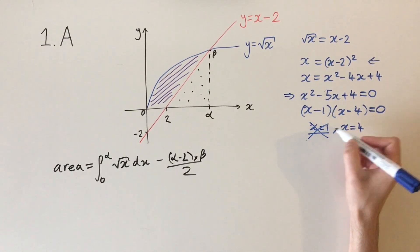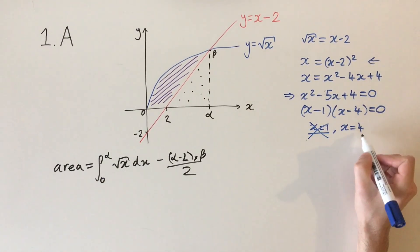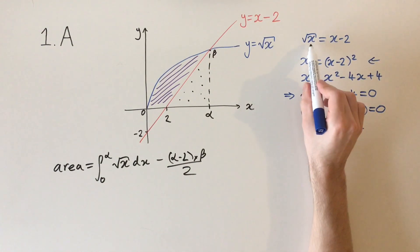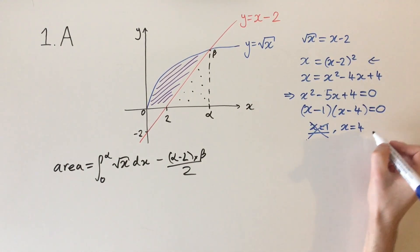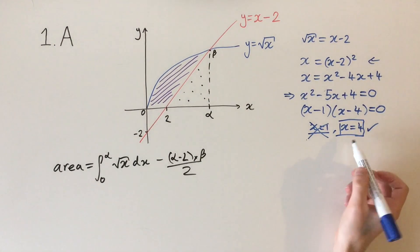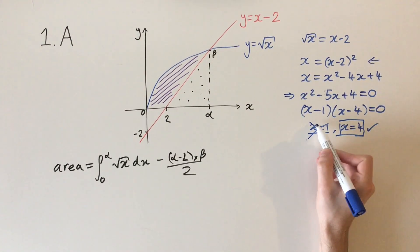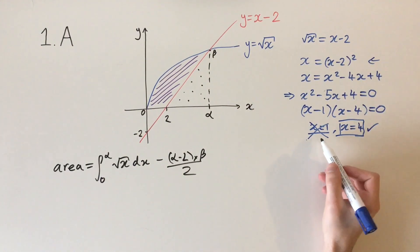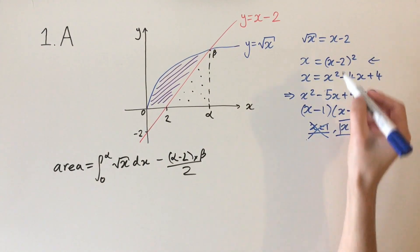On the other hand, x equals 4: square root of 4 is 2, and 4 minus 2 is also 2, so this is true, which means x equals 4 is our solution. Now, why does this not solve this equation? Essentially, by squaring both sides we're introducing the solution that would look like this if we had the negative parabola.